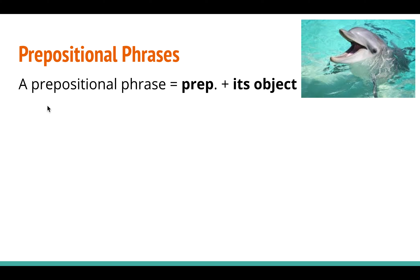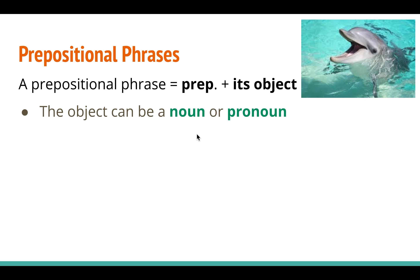A prepositional phrase is a preposition plus a little bit more. It always begins with a preposition — a word like 'at,' 'in,' 'from,' or 'with' — those small prepositions that we learned about. It also has the object of that preposition. The object is either going to be a noun or a pronoun. A prepositional phrase begins with a preposition and ends with either a noun or a pronoun — that will be the last word.